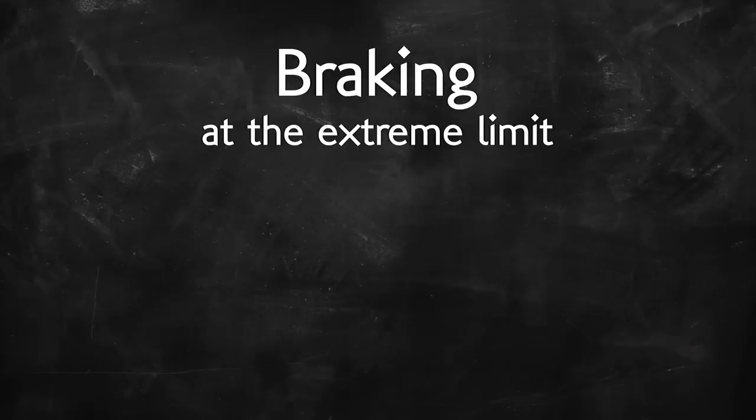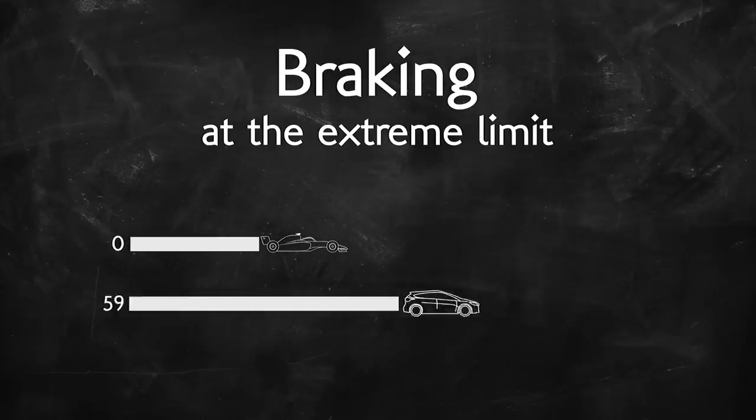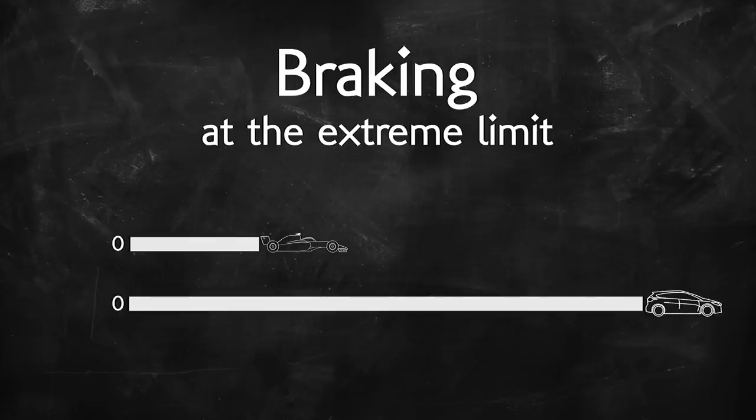Formula 1 cars can come to a stop from 100 kilometers per hour in about 15 meters, which is almost a quarter of the braking distance of your average road car. They can go from 300 kilometers per hour to a complete stop in under 4 seconds, pulling up to 6g of deceleration force.